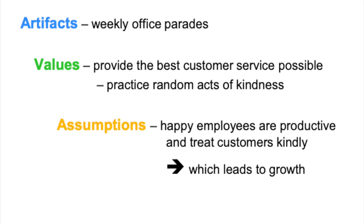Here's how I might map the artifacts, values, and assumptions at Zappos. Note that there is no one right answer in doing this — there's room for interpretation, and what makes a good cultural analysis is how compelling your interpretation is. One visible artifact would be the weekly office parades. The values are summed up as: provide the best customer service possible and practice random acts of kindness — values derived from what we're reading and noticing. The company also has its own long formal list of value statements. The assumption forms a kind of causal chain — it's their theory of how things work.